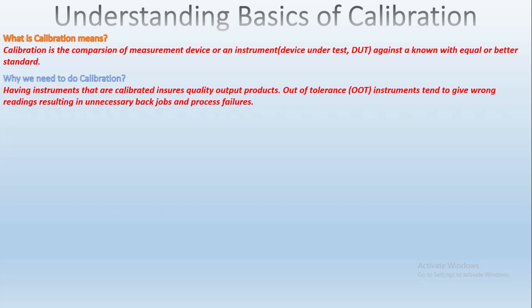Bad or low quality products would pass as good ones, resulting in warranty costs, and good products would be flagged as non-conformance to quality, resulting in unnecessary reworks. So basically, calibration is all about producing high quality, which equals money.